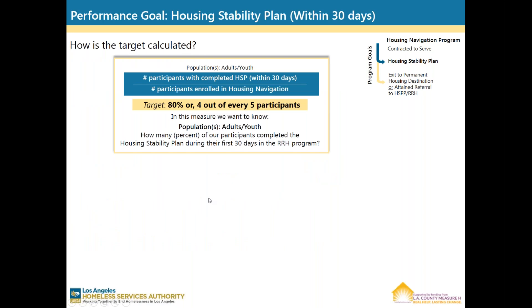How is this target calculated? For adults and youth, you're looking at the number of participants with completed housing stability plans within 30 days divided by the total number of participants enrolled in housing navigation. The target is 80%, or 4 out of every 5 participants. In this measure, we want to know how many of our participants completed the housing stability plan during their first 30 days in the program.